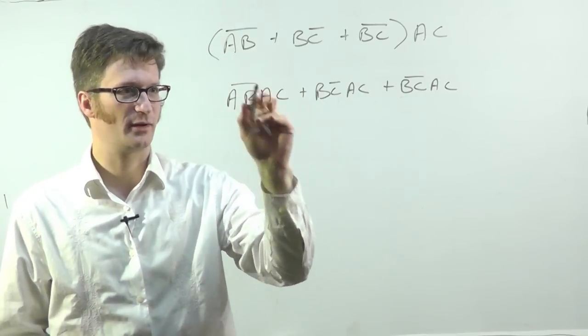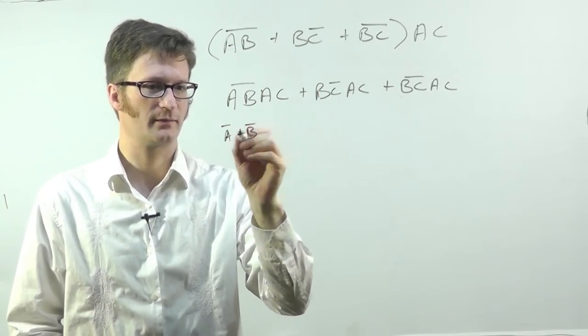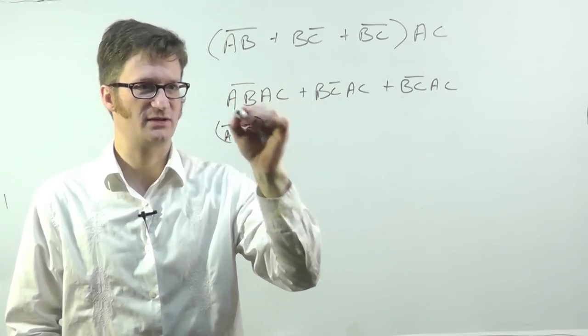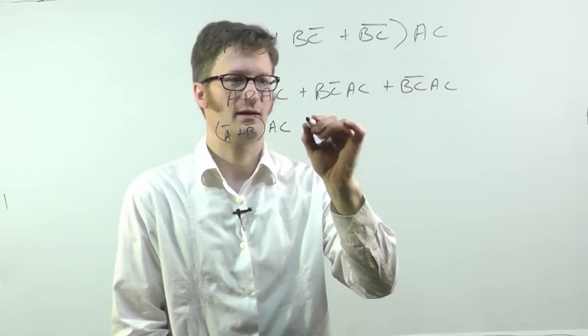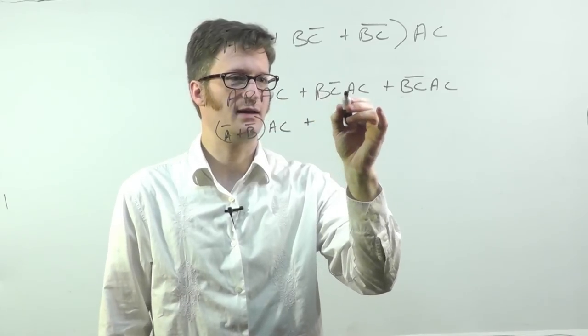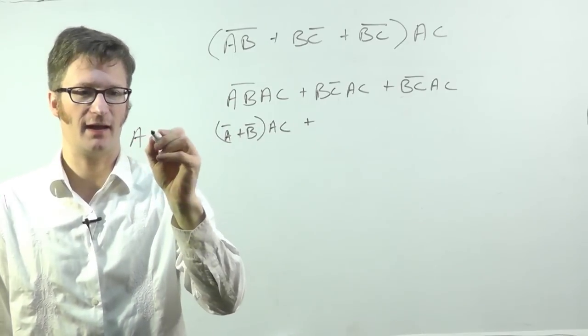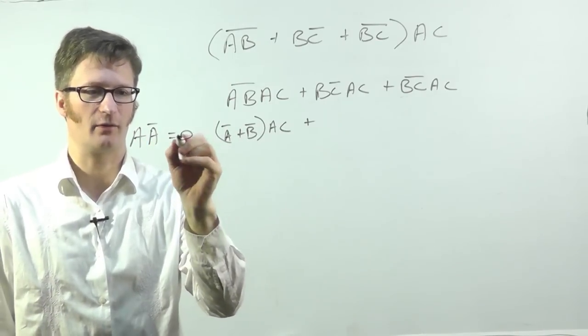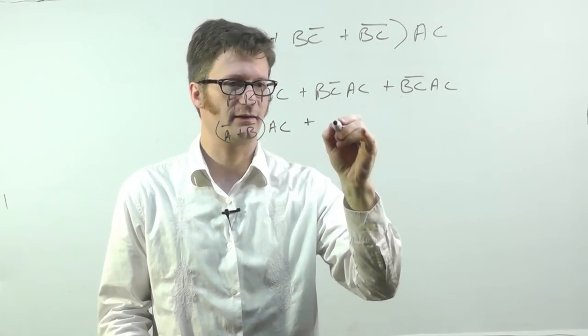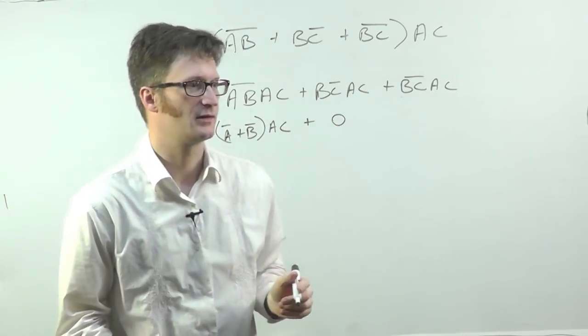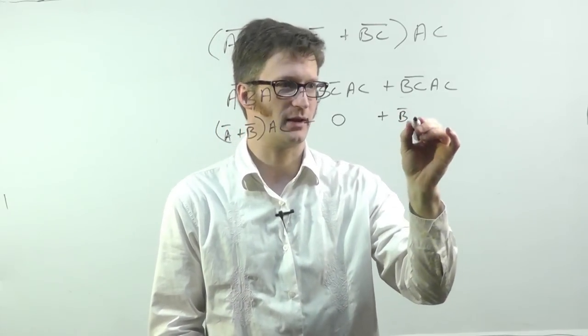And I'm not quite sure what to do with this, so I'm going to apply DeMorgan's Theorem to get A bar or B bar. And then I'm just applying it to that chunk, anded with A C. And here I have B C bar A C, and if you remember from before, I had A A bar, and that always equals zero. So because of that, zero times A B still equals zero. So this term just works out to nothing.